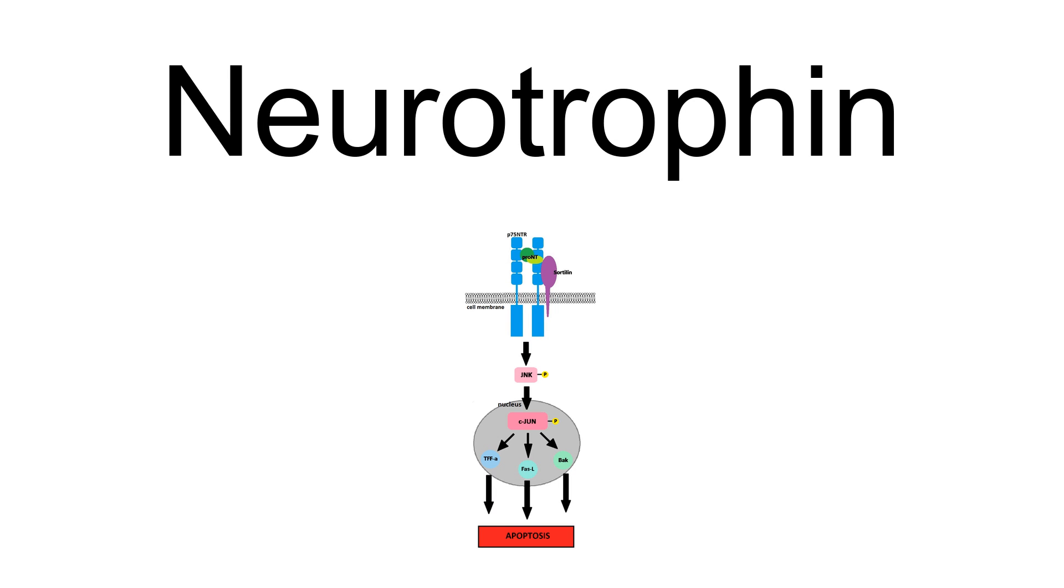Neurotrophins are a family of proteins that induce the survival, development, and function of neurons. They belong to a class of growth factors, secreted proteins that can signal particular cells to survive, differentiate, or grow.